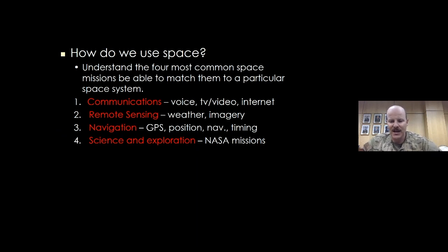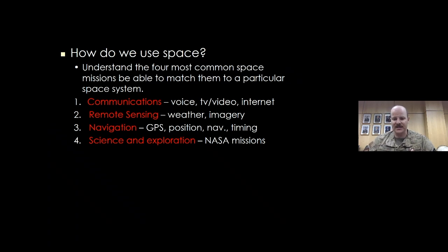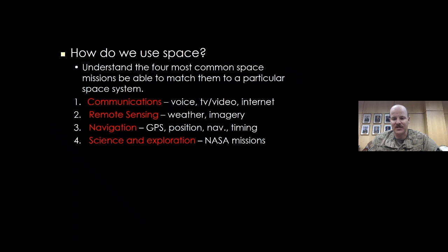The next mission is remote sensing. When I say remote sensing, you can think of sensing from afar — basically taking pictures and exploiting those images. In a military construct, you're usually using those images for intelligence purposes. For civil purposes, you might be doing weather. This is really useful for people who might not even think they're users of space. Farmers are absolutely dependent on this information to plan their crops — when and where they should plant. Remote sensing is absolutely critical for them.